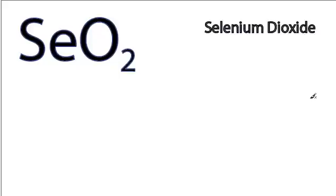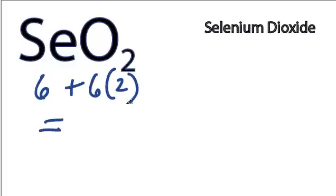This is Dr. B. Let's do the SeO2 Lewis structure. Se on the periodic table, 6 valence electrons, oxygen 6. We've got 2 of them for a total of 18 valence electrons.